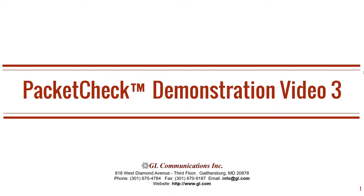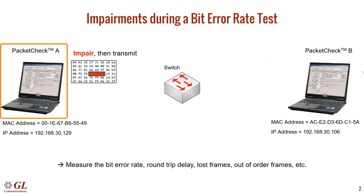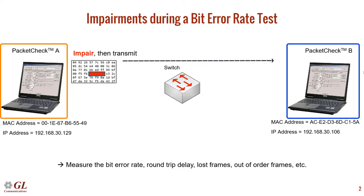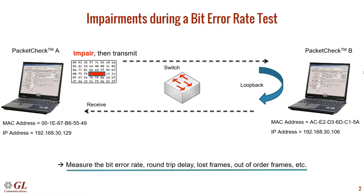Welcome to another GL Communications product demonstration video. This video is a continuation of our PacketCheck series. PacketCheck is our easy-to-use software program for Ethernet and IP testing. We will now demonstrate how to intentionally impair packets prior to transmission. We will demonstrate a bit error rate test using PacketCheck, which is installed on two computers. Both computers are on a local area network connected to an Ethernet switch, referred to as PacketCheckA and PacketCheckB. All relevant statistics — such as the bit error rate, round-trip delay, and lost frames — will be computed on PacketCheckA.